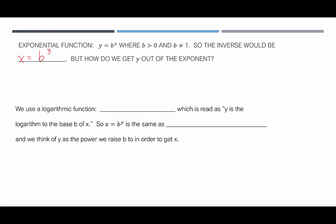The logarithmic function says we can get y out of the exponent by writing it as y equals log base b of x. So it's read: y is the logarithm to the base b of x. Thus, x equals b to the y is the same as y equals log base b of x. We think of y as the power we have to raise b to in order to get x.